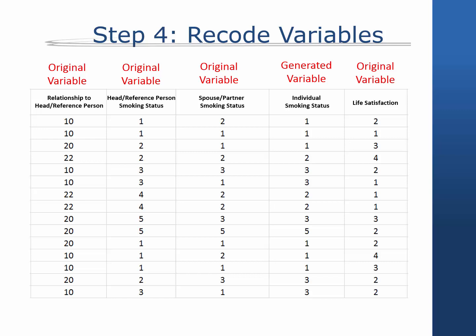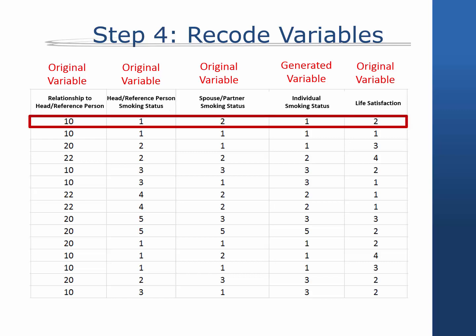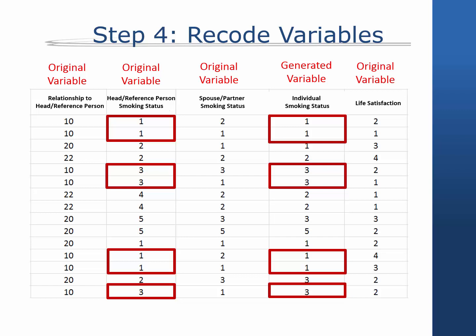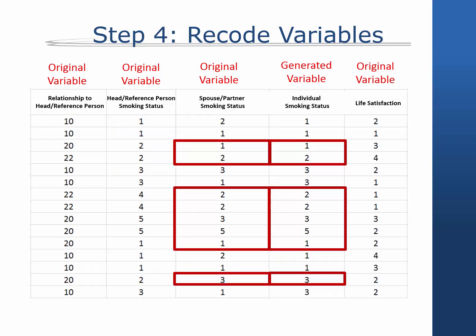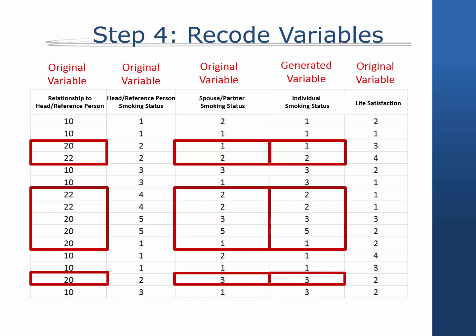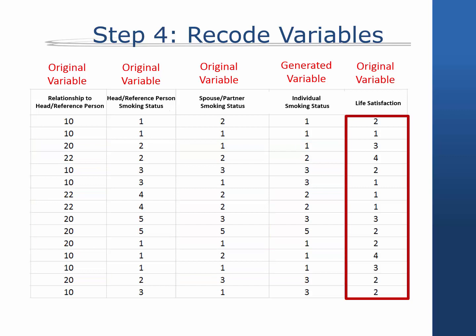Step 4: Finally, you will need to create a new set of respondent level variables that are assigned to either the head or reference person or spouse or partner's information. Note that you do not need to create new variables for the variables collected only from respondents. For instance, respondent's smoking status will equal the head or reference person's smoking status if the respondent's relationship to head or reference person is 10, and equal the spouse or partner's smoking status if the relationship is 20 or 22. The respondent level variables, including life satisfaction and psychological distress, will automatically be correctly assigned to the respondent.